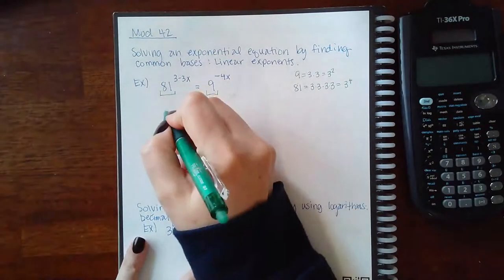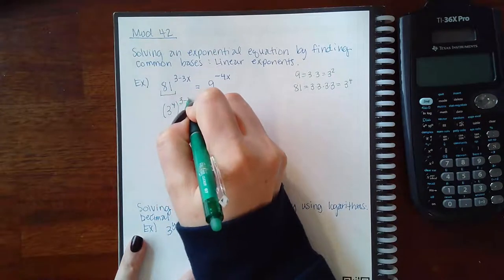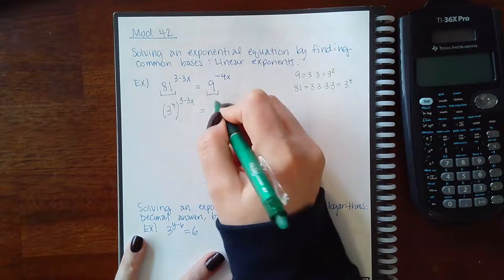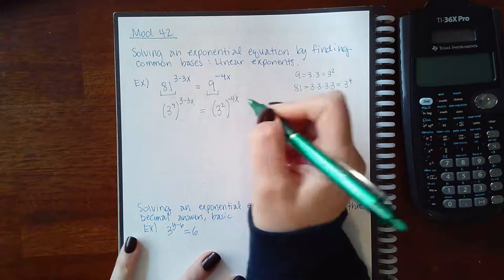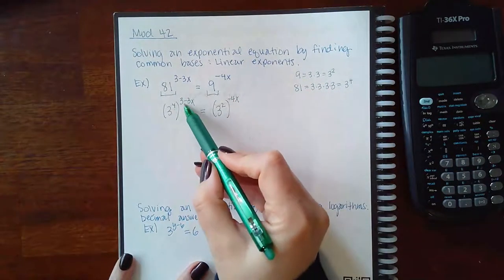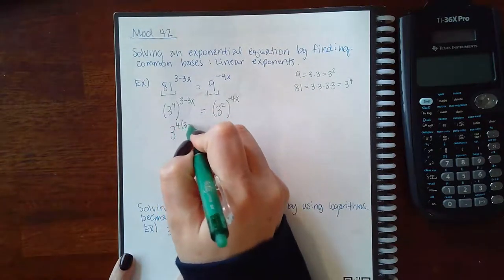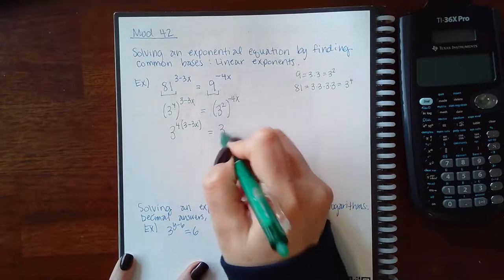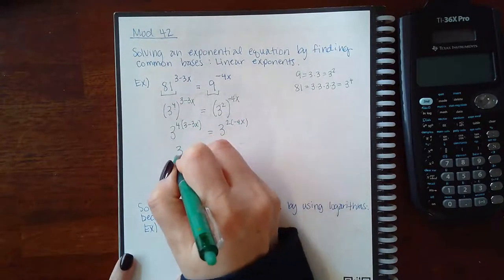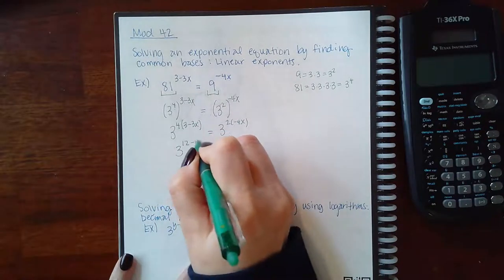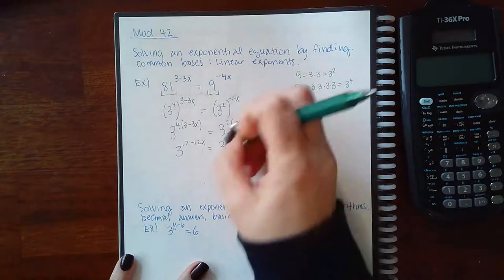So this 81 will become 3 to the 4th power and then it keeps its old exponent there. This becomes 3 squared and its old exponent. And what do you do when you have an exponent raised to another exponent? You simply multiply those exponents together. So then this becomes 3 to the 12 minus 12x equal to 3 to the negative 8x.